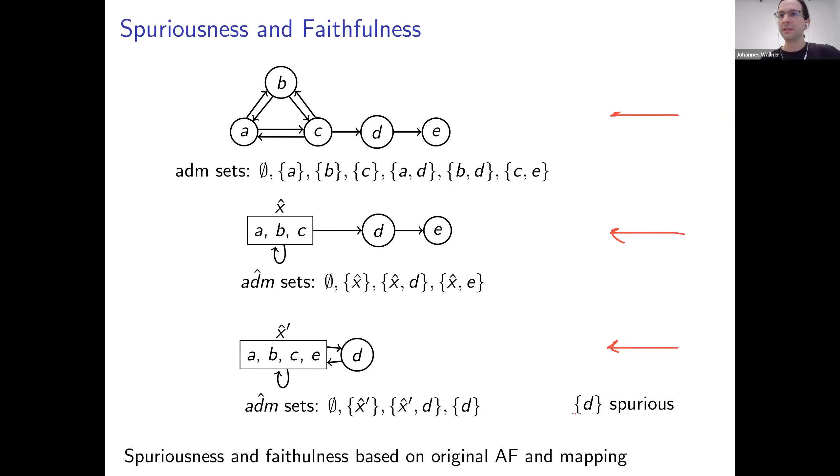In this case, we say that D is spurious. So why spurious? Because it just occurred, just emerged via the abstraction. But there is no concrete admissible set. And if such a thing does not occur with respect to a specific semantics, we say that the corresponding clustered framework is with respect to admissible sets faithful to the original. This is the case here in the middle one.